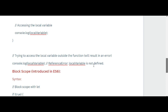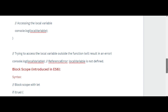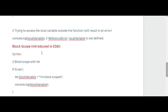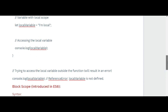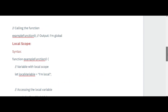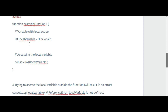The error is a ReferenceError: localVariable is not defined. So localVariable is declared inside the exampleFunction, giving it local scope. Attempting to access localVariable outside the function results in a ReferenceError because it is not defined in that outer scope.